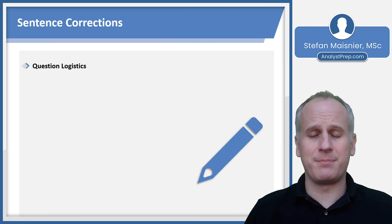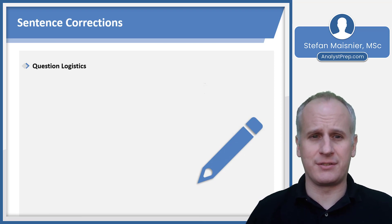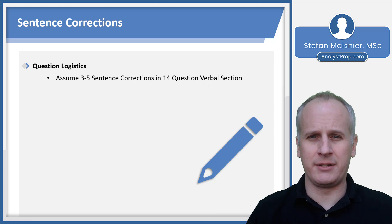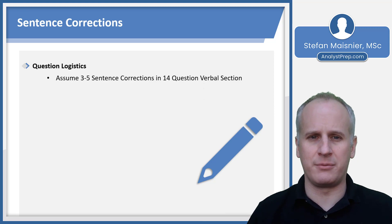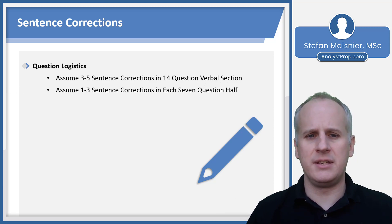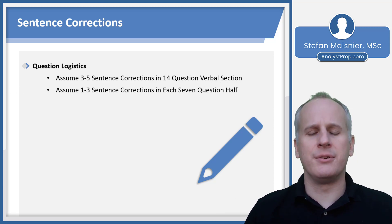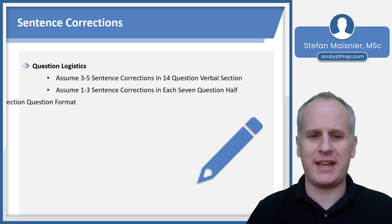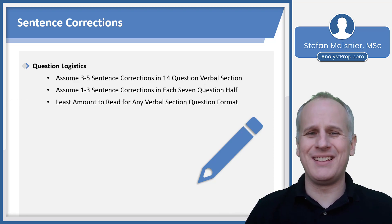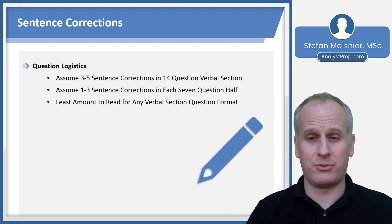Let's begin by rehashing the question logistics for this format you'll encounter on the verbal section. Assume there are going to be three to five sentence corrections in every 14-question verbal section of the EA. You're going to have one to three sentence corrections in each seven-question half, and there will be the least to read on a sentence correction compared to any other question in the verbal section.